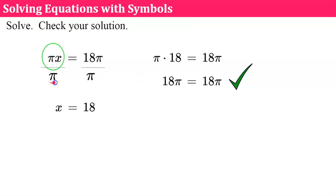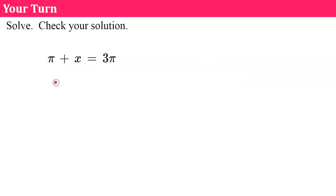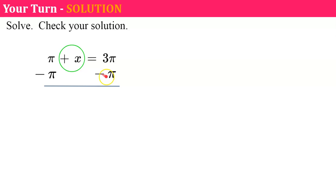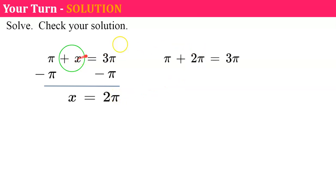Beware if you see a symbol like pi — it just represents a number. Your turn — go ahead and pause, solve, check, and come back. Welcome back. We identify what is happening to x: x is being added by pi. The inverse of add pi is to subtract pi from both sides. This gives me a zero pair, leaving just x. And 3 pi subtract pi is 2 pi — if you have 3 pi's and take 1 pi away, you have 2 pi's remaining. We check by replacing x with 2 pi: pi plus 2 pi is 3 pi. It checks.